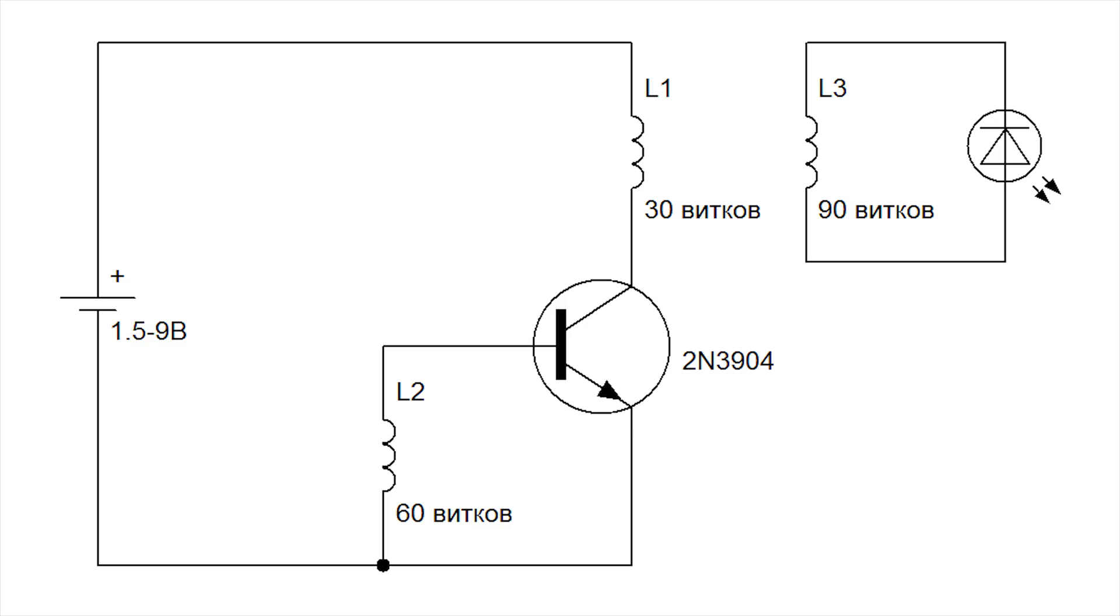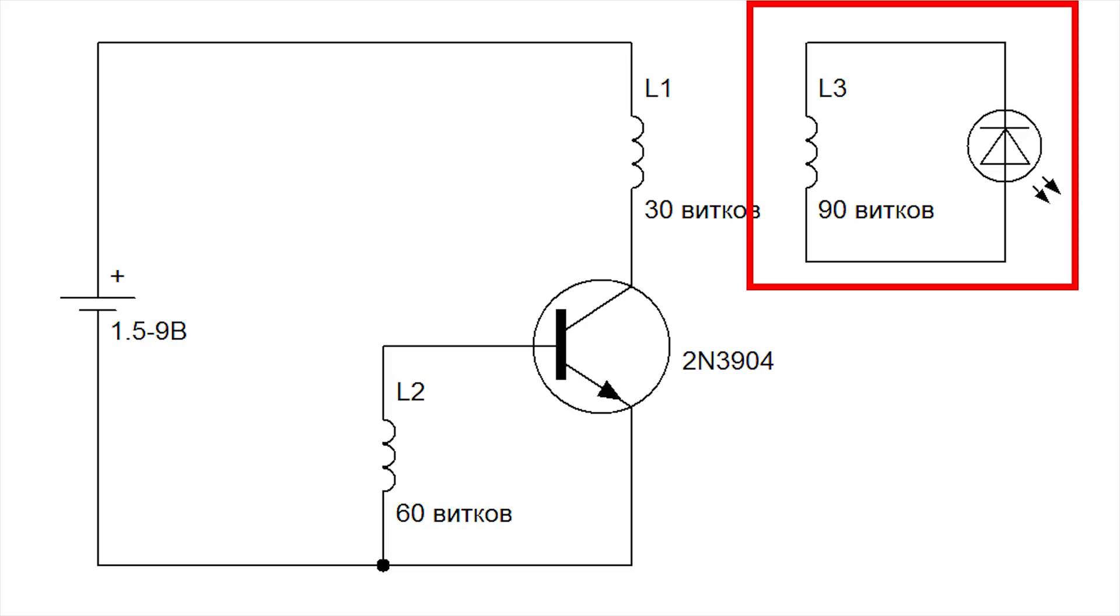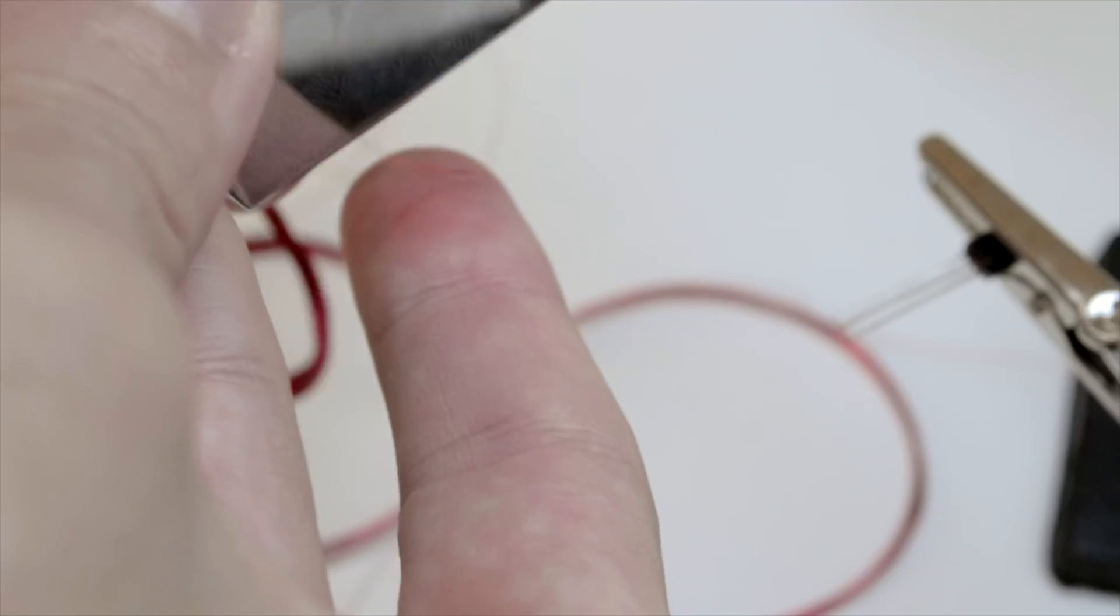Now let's look at the circuit. It consists of 2 parts: 2 coils and a transistor is a generator, and the 3rd coil and LED indicator. Getting to assembly.